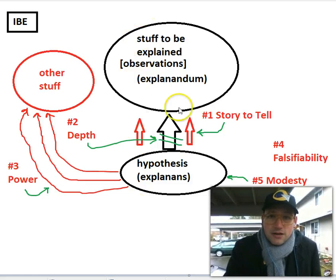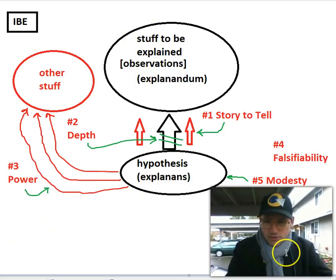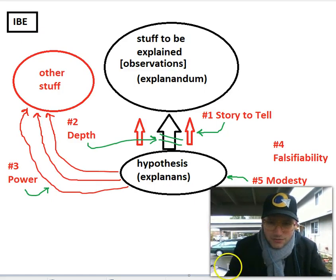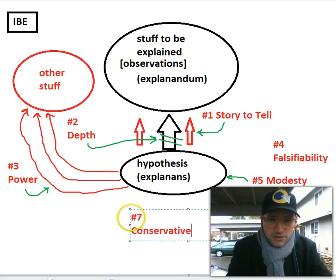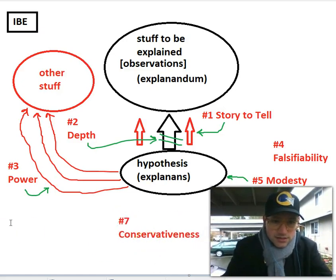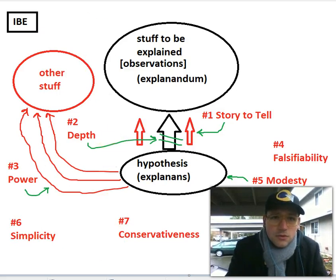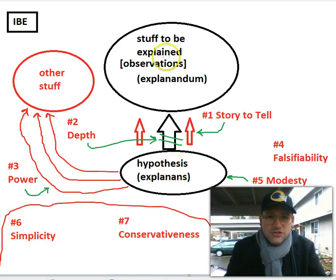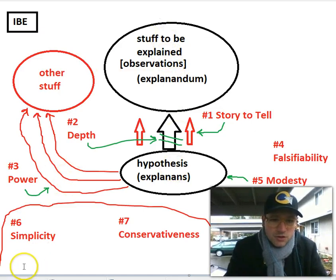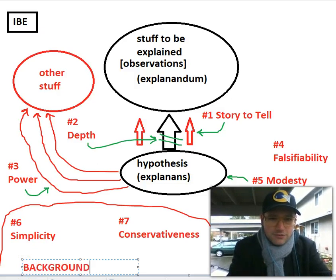Let's go to the last two, which are kind of related. Number seven is 'conservativeness' and number six is 'simplicity.' I'm drawing a zone on the chart that represents our background assumptions — all the beliefs we have about reality and how it works: how people work, how physics works, how societies work, everything that's part of our picture of reality.